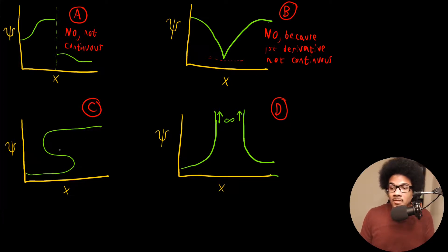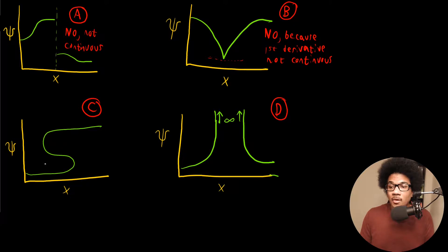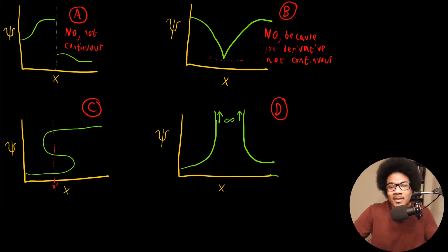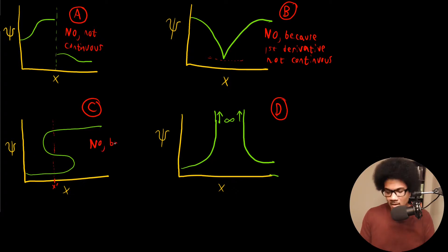Moving on to example C: this is a function that has an S shape, starting to increase gradually, snaking around, and coming back to a flat point. This is also not going to be a valid wave function because it is not single valued. If I go to a particular point X prime, I can see it cuts through three different points for that wave function. Even though it's continuous and can be integrated, from a probability standpoint it would not be single valued — you'd end up with multiple different probabilities for the same region of space, which is not acceptable within the Born interpretation.